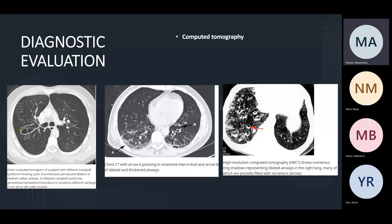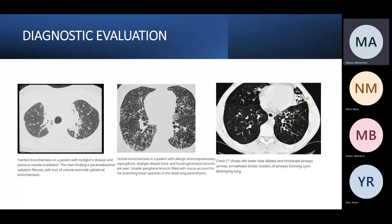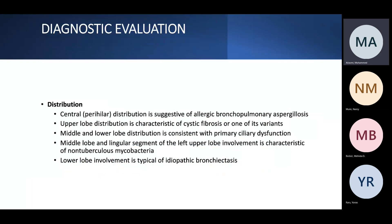Some imaging examples: the first shows Williams-Campbell syndrome with loss of airway tapering. The second shows tree-in-bud pattern in A and B with multiple dilated bronchioles. The last is a high-resolution CT scan showing mucus inside the bronchial wall. Additional images show traction bronchiectasis, central bronchiectasis, left lower lobe dilation and airway thickening, and an arrow pointing to a cyst emerging from the bronchial lumen.